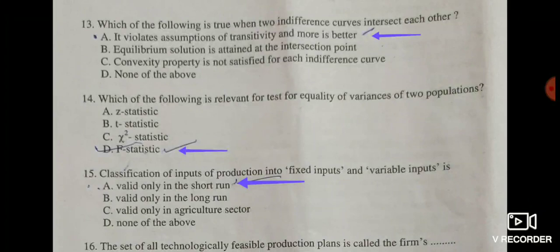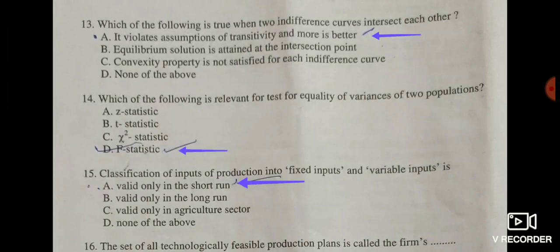Question thirteen: which of the following is true when two indifference curves intersect each other? Options are: it violates the assumption of transitivity and more is better; equilibrium is attained at the intersection point; convexity property is not satisfied; or none of the above. When two indifference curves intersect, it violates the assumption of transitivity and more is better. The correct answer is option A.